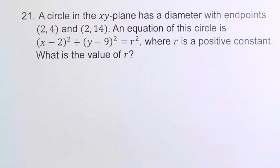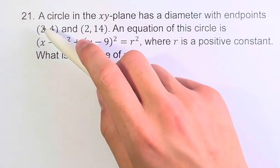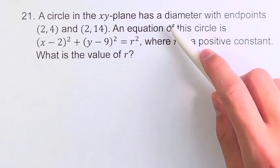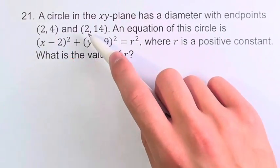Hello and welcome back to another video. In this problem we're told that a circle in the xy-plane has a diameter with endpoints (2,4) and (2,14).